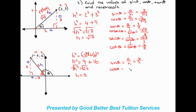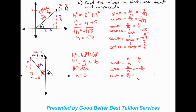Cos theta is adjacent over hypotenuse. The adjacent is minus three, so since we have one negative value the whole fraction is negative — minus three over five. Then tan theta is opposite over adjacent: opposite is four, adjacent is minus three, so the whole fraction is negative — four over minus three.